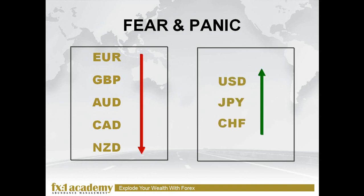In times of fear and panic, the opposite happens. The five risk currencies — the euro, the sterling, the Aussie, the Canadian dollar, and the Kiwi — they will all fall. On the other hand, the three safe-haven currencies — the US dollar, the Japanese yen, and the Swiss franc — will strengthen. In summary, in times of fear and panic, you will see currencies like the Aussie-yen dropping, the Canadian-Swiss dropping, the pound-yen dropping, and the euro-dollar dropping.